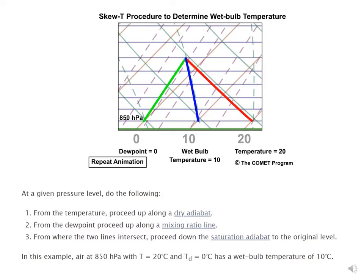We're now going to use the skew-T to determine the wet bulb temperature. In this example, we have an air parcel with a temperature of 20 degrees C and a dew point temperature of 0 degrees C. The procedure is as follows: follow the temperature upwards along a dry adiabat, lifting the air parcel up until it intersects the isohume — the line of constant mixing ratio passing through the dew point, in this case the green line. Once they intersect, follow a saturated adiabat back down to the original pressure surface at 85 kilopascals, giving a wet bulb temperature of 10 degrees C.